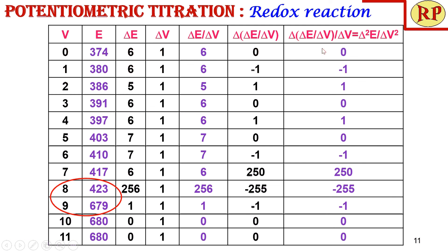Now we tabulate the readings: volume of potassium dichromate (0, 1, 2, 3, 4 ml, etc.) against the EMF values seen on the display. In the beginning there is a very incremental change, but at a particular addition the EMF jumps from 423 to 679 millivolts, indicating we have nearly reached the equivalence point. This is the first titration. For an even more accurate reading, we repeat the titration starting from 7.5 ml, adding 0.1 ml increments (7.5, 7.6, 7.8, etc.) to precisely locate the end point.